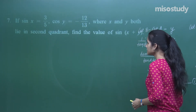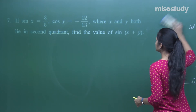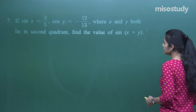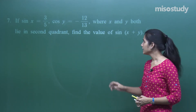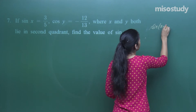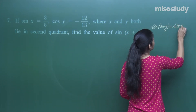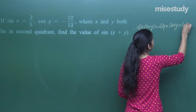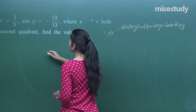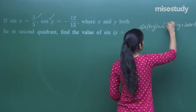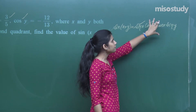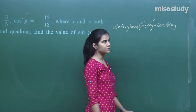Next: sin x = 3/5 and cos y = −12/13, with x and y both lying in the second quadrant. Find sin(x + y). Using sin(x + y) = sin x cos y + cos x sin y, we already have sin x and cos y, but need cos x and sin y. From sin²x + cos²x = 1: cos²x = 1 − (3/5)² = 1 − 9/25 = 16/25, so cos x = ±4/5.